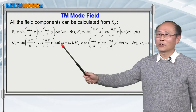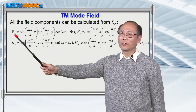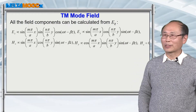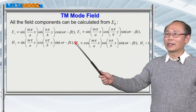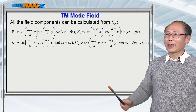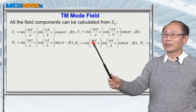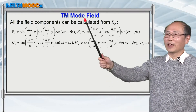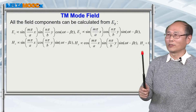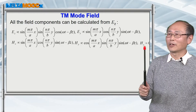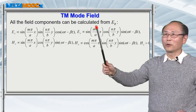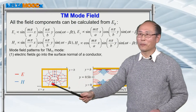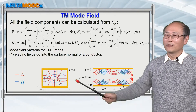Now we already have the expression for the z-component of the electric field. You can pick up those formulas from the last lecture and deduce all the other field components. They are given on this page. For this TM mode field, you don't have a magnetic field component along the z-direction, so you have those four transverse field components.